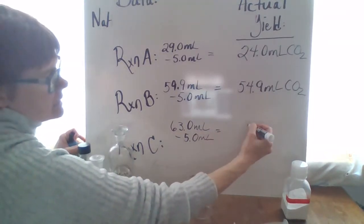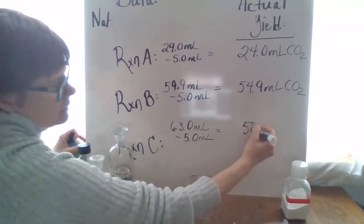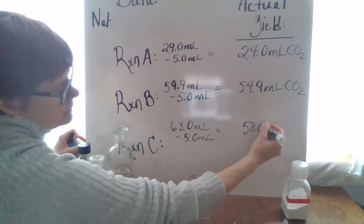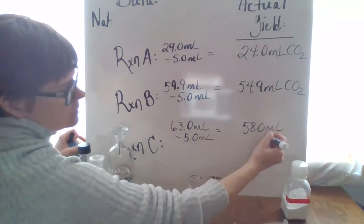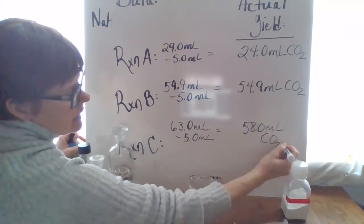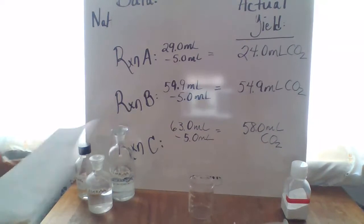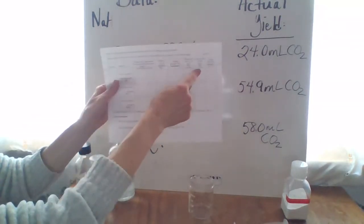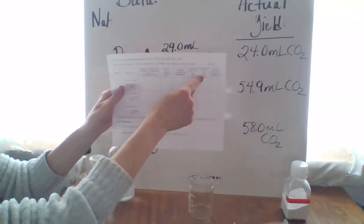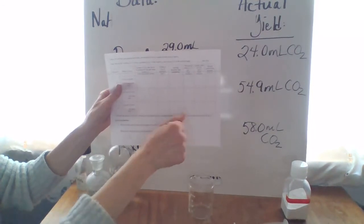So we get 58.0 mils CO2 from this last reaction. Those are our actual yields. So I said that I would run through finding your percent yield. So go ahead and record your actual yields into the actual yield column from the experiment.